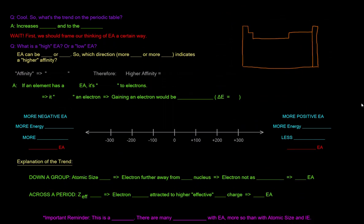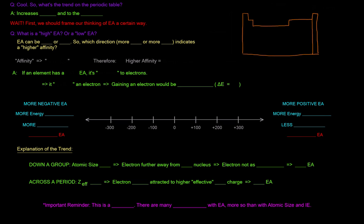So let's get into the trend. With electron affinity across the periodic table, it increases up and to the right, in the same way that ionization energy does. We have to make sure that we're excluding the noble gases, because they're not trying to gain electrons at all.